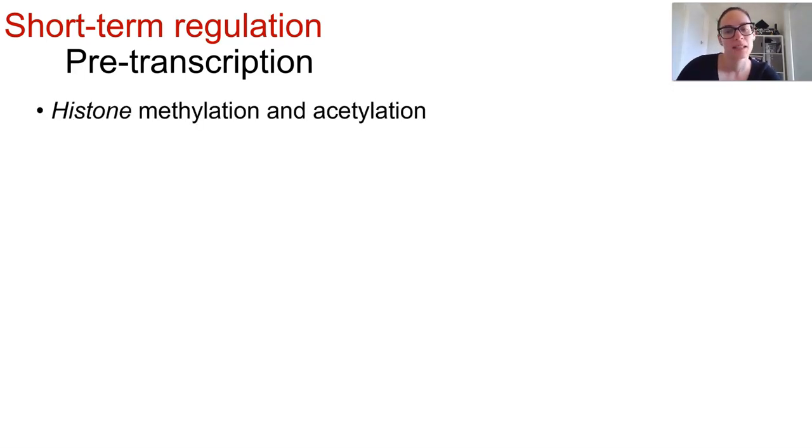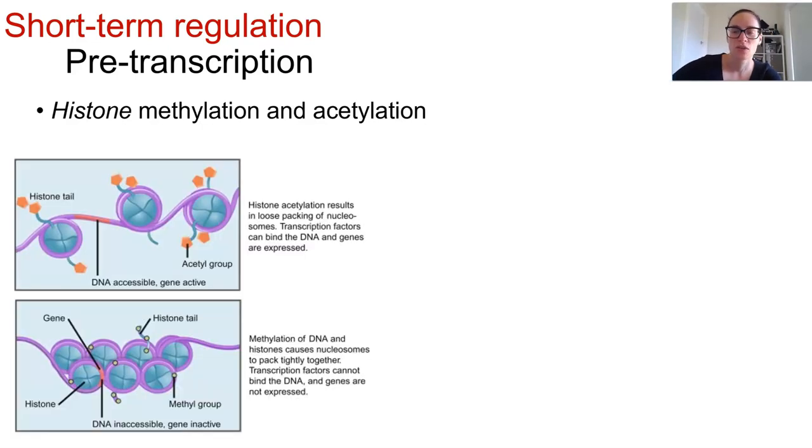Chromatin can be chemically modified to allow certain genes to be unwrapped, exposed, and transcribed, and these processes are known as methylation and acetylation. Acetylation occurs when the acetyl group is added to amino acids on the tails of the histone protein.